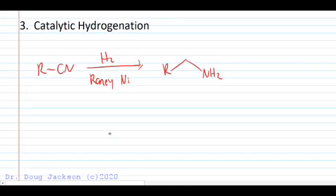Nitriles can also be reduced by catalytic hydrogenation with hydrogen gas and Raney nickel to a primary amine. This is a metal mediated syn addition, just like we saw with our other catalytic hydrogenations, and will not require a mechanism for the course.